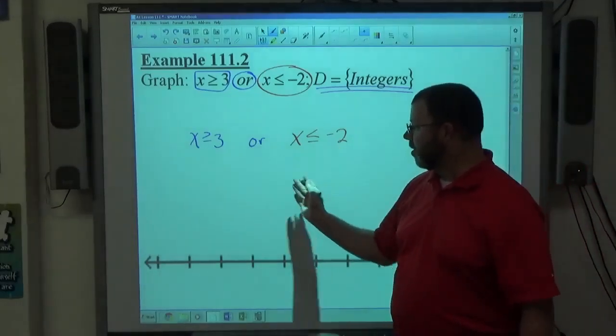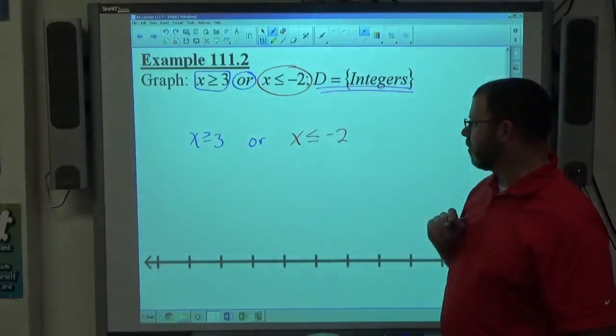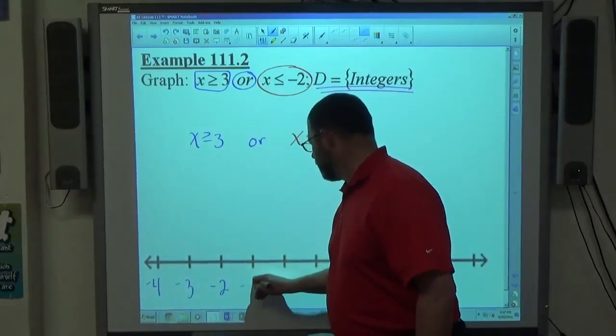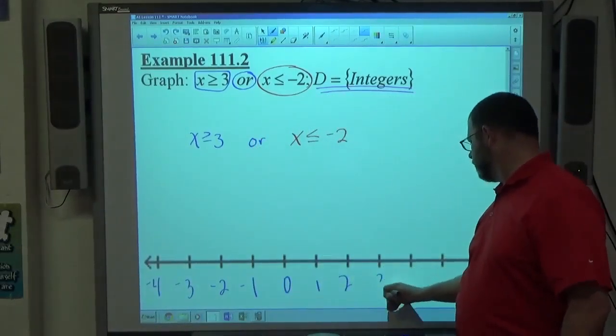Example 2, this is a disjunction. The word 'or' is involved with a disjunction. Or means that we graph both inequalities individually on the same number line with the given domain.